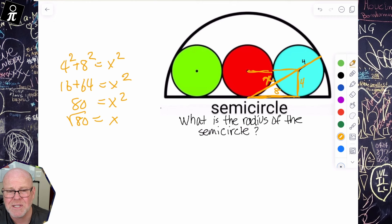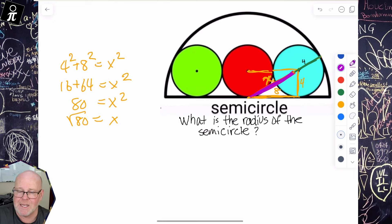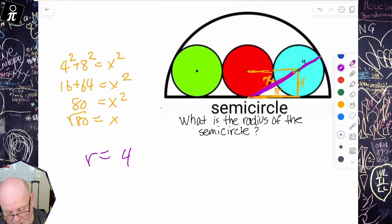But now we actually have the answer because all we have to do to get the radius of the semicircle - I know that this piece right here is the square root of 80 plus this extra four. So now I know that the radius of the semicircle is four plus the square root of 80.